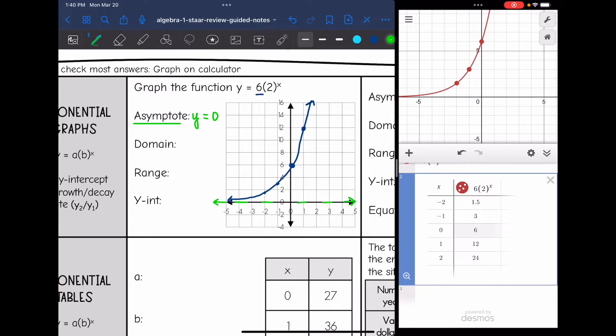And my domain is all real numbers since this graph is going left and right forever. And then the range is greatly affected by that asymptote because the graph is never going to go past this. So that's the bottom of the graph. And we're never going to touch that boundary. So my range is y > 0 because the graph will approach zero but never cross it and it's everything above zero. And then my y-intercept is (0, 6).